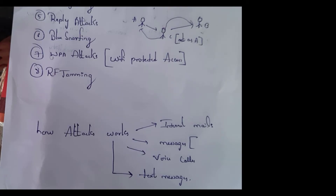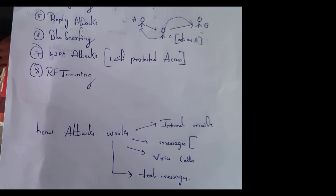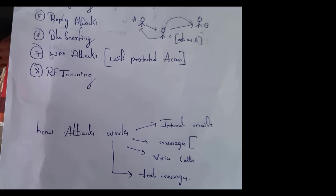Sixth one is bluesnarfing. Unauthorized access to information by using Bluetooth is known as bluesnarfing. For example, a hacker transfers all files such as videos, images, etc., by using Bluetooth. This is an example of bluesnarfing.